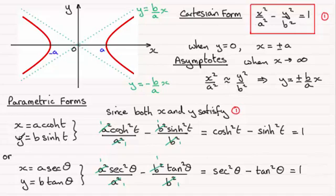So we've got then two parametric forms that we can turn to for the equation of a hyperbola. So I hope that's given you an idea now of the Cartesian form, the equations of the asymptotes, and the parametric forms that we can use for the equation of a hyperbola.